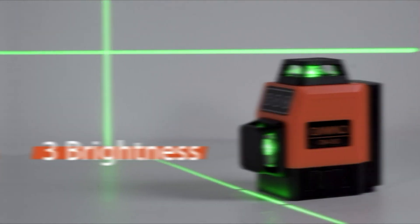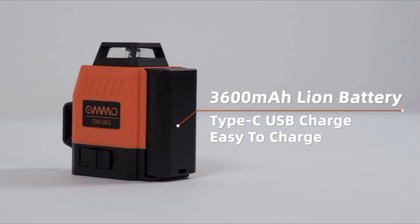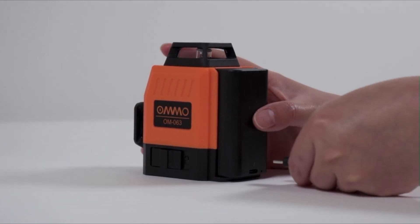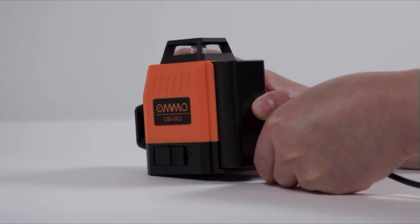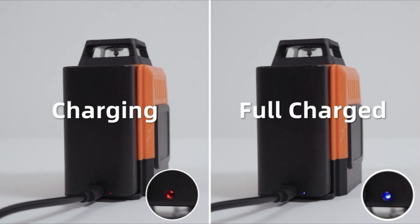When the button on the side is turned to the unlocking position, it's on the self-leveling mode, and you'll get a bright, high-accuracy horizontal and vertical line projected on any flat surface within 3 degrees of horizontal/vertical.